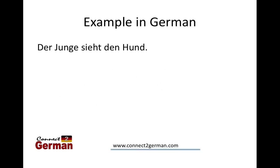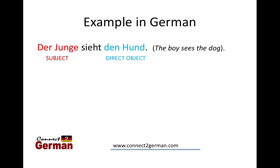Let me give you an example in German. Still working with the verb 'seeing': Der Junge sieht den Hund - the boy sees the dog. Der Junge, which is the boy, is the subject of the sentence. Den Hund, the dog, is our direct object. The boy is the one that's seeing the dog, not the other way around.